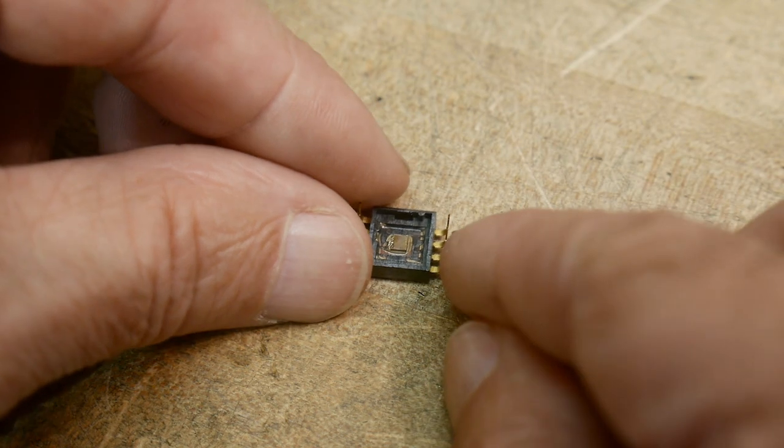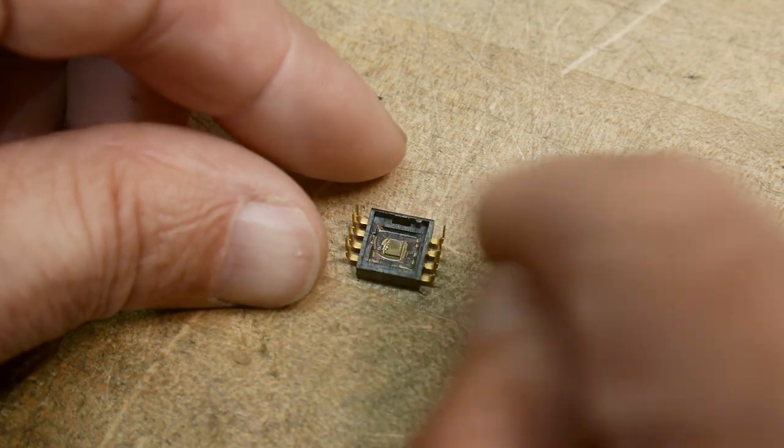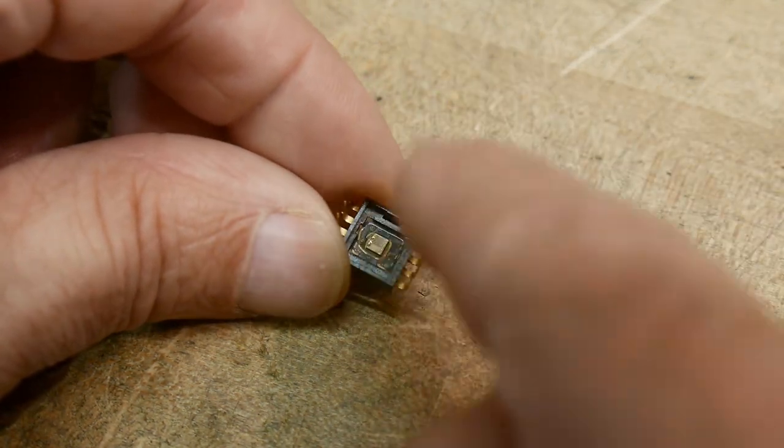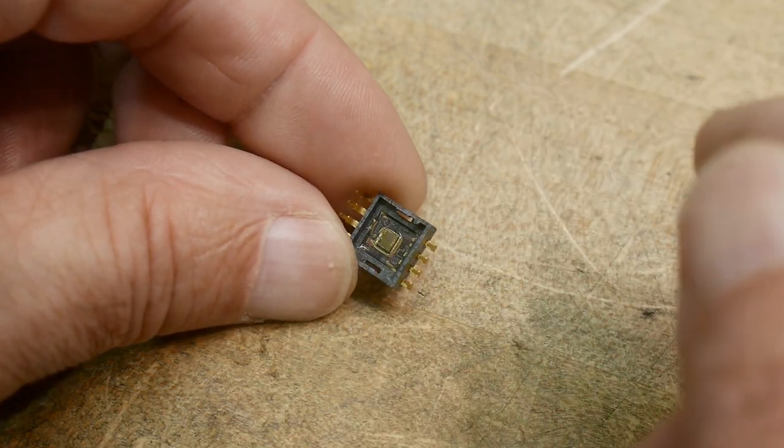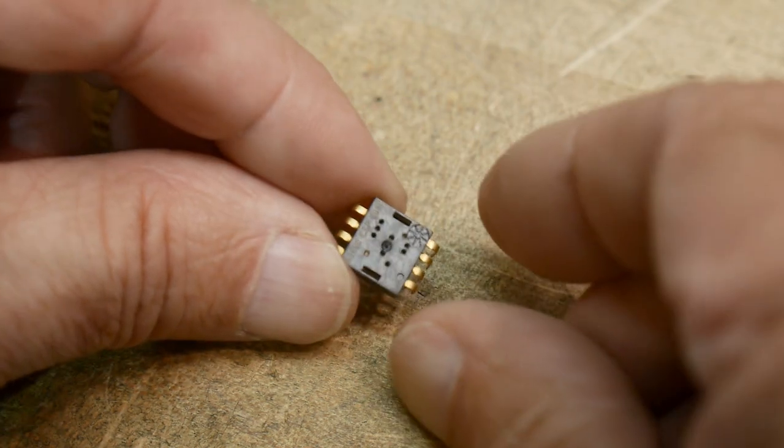But none of us recognize the package, so it may have been something that was developed but then never actually sold to anybody. It is similar. It has a hollow cavity and there's a die in there and that die is bonded out and you can see the conformal coating on that.